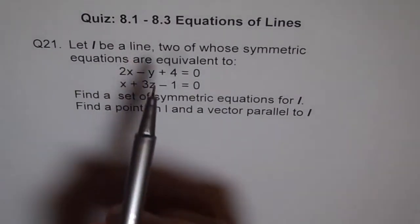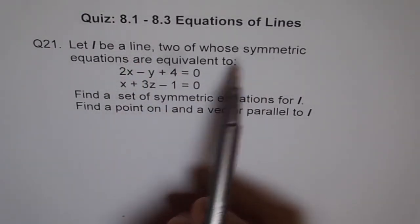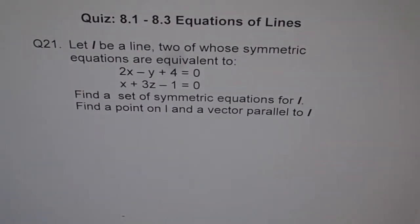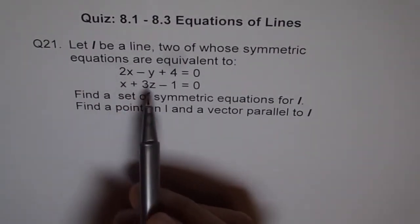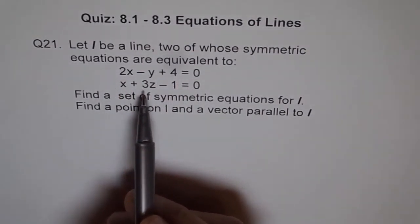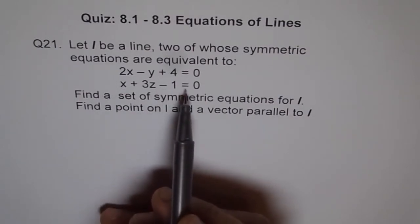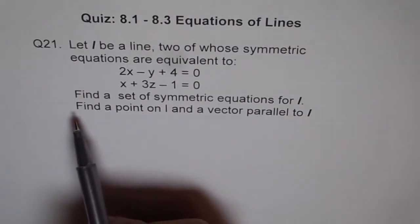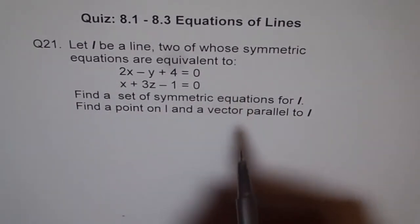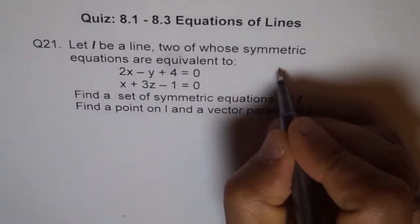Let L be a line, two of whose symmetric equations are equivalent to this. That means you can always split the equation and write it like shown here. That's very important. 2x minus y plus 4 equals 0, and x plus 3z minus 1 equals 0.